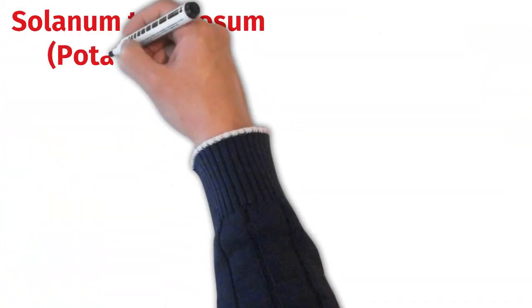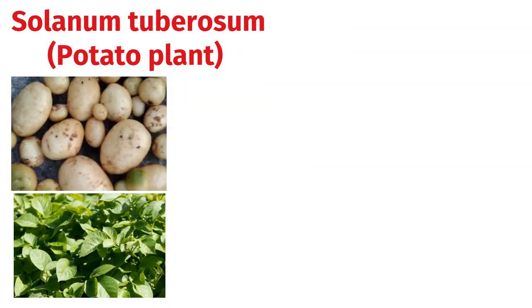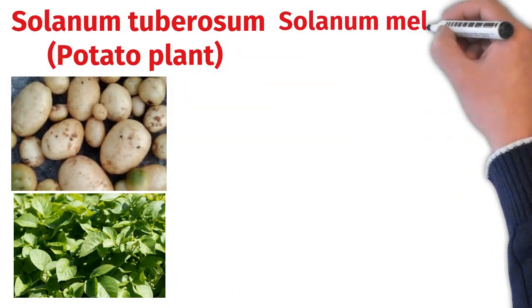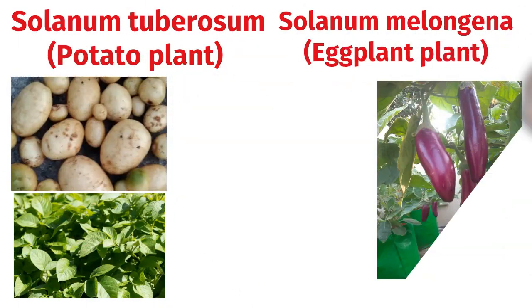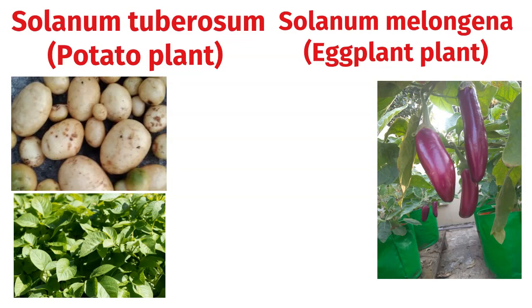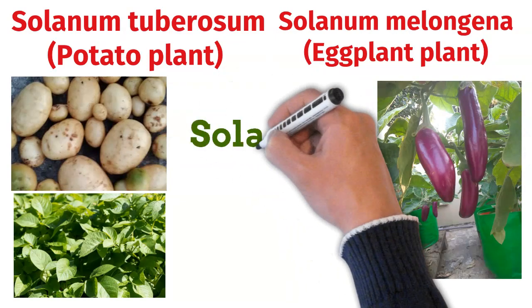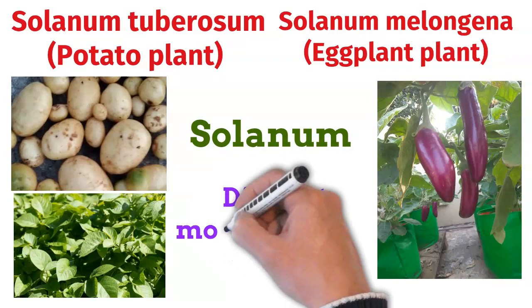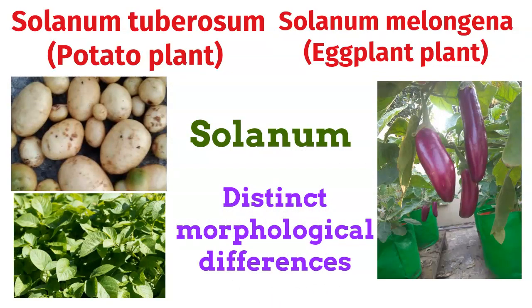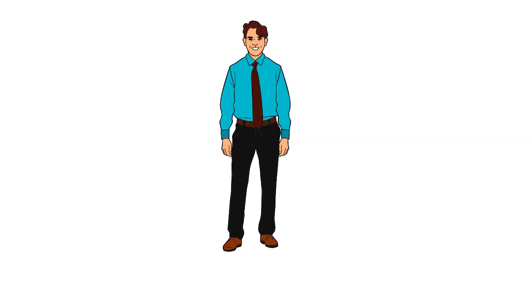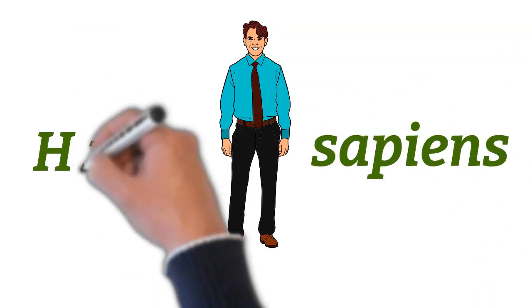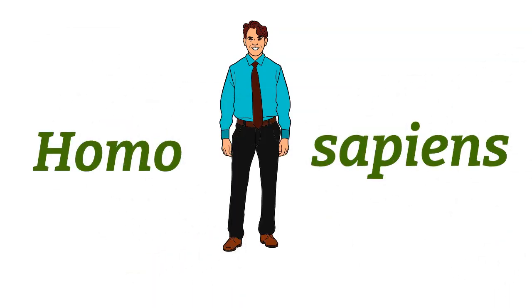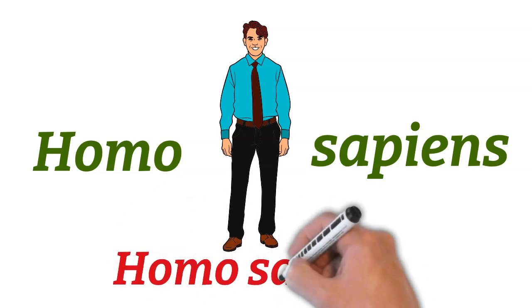Likewise, Solanum tuberosum (potato plant) and Solanum melongena (eggplant) belong to the same genus Solanum but differ in species based on some distinct morphological differences. Human beings belong to species sapiens and genus Homo, thus the scientific name of human beings is Homo sapiens.